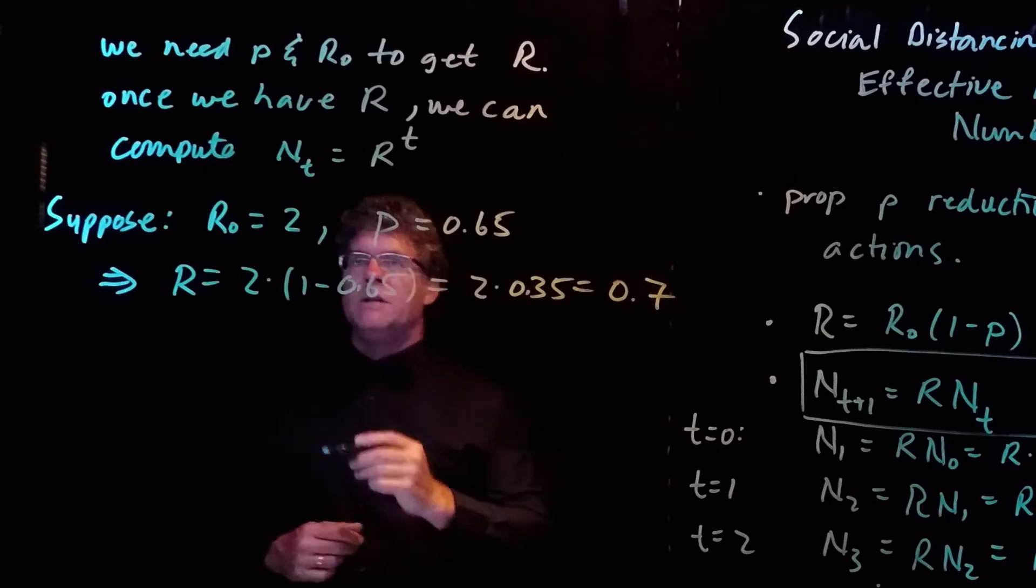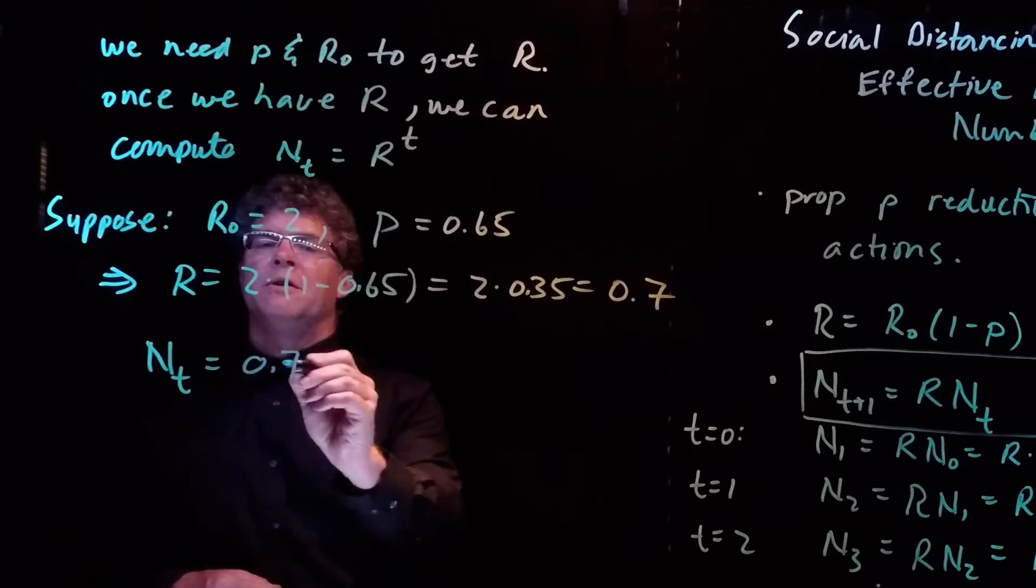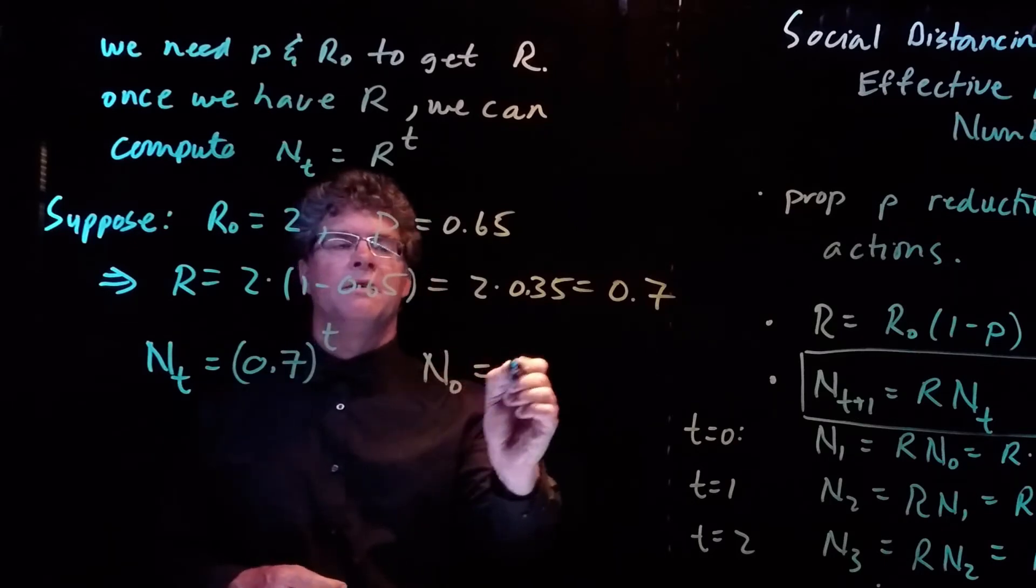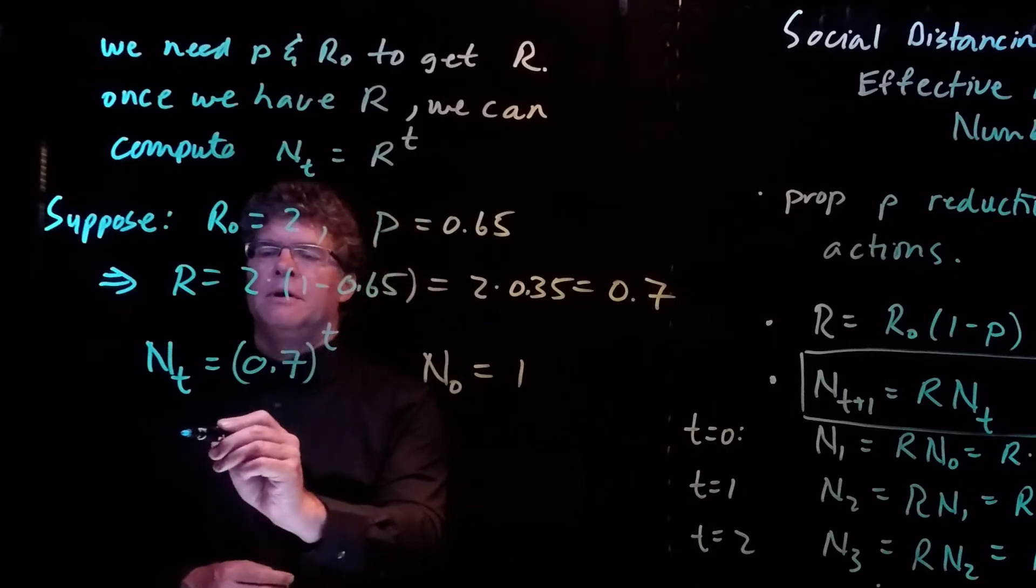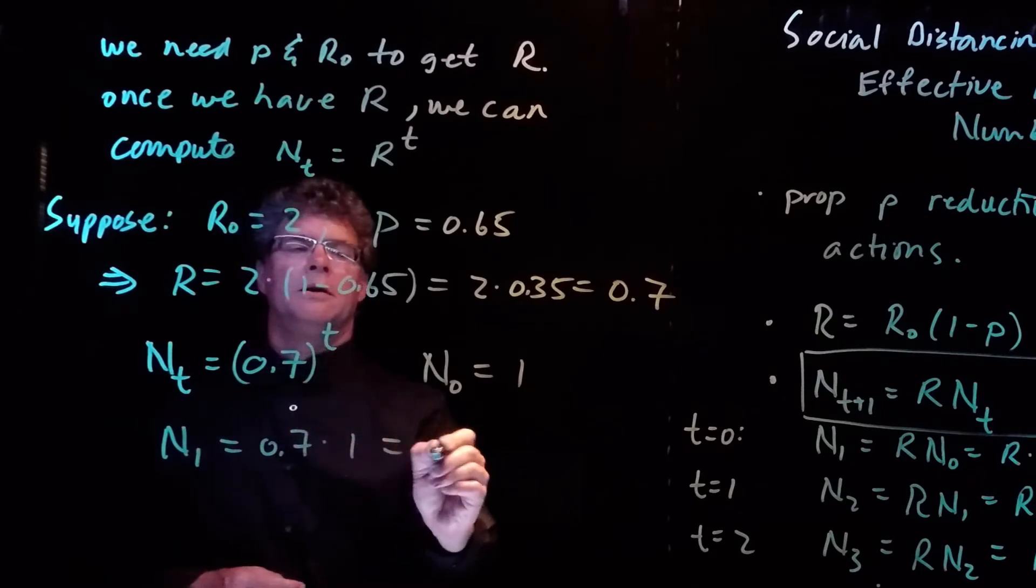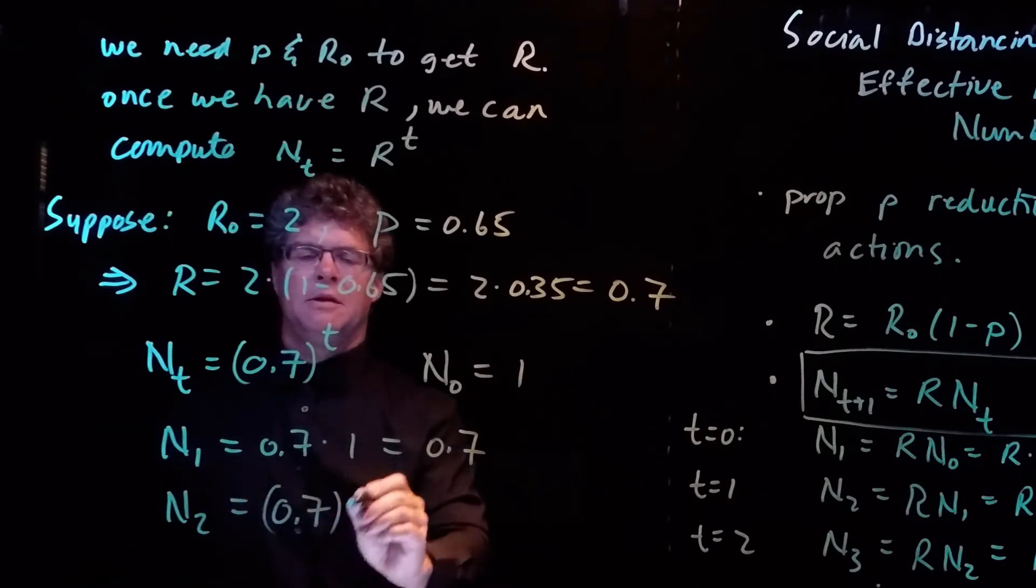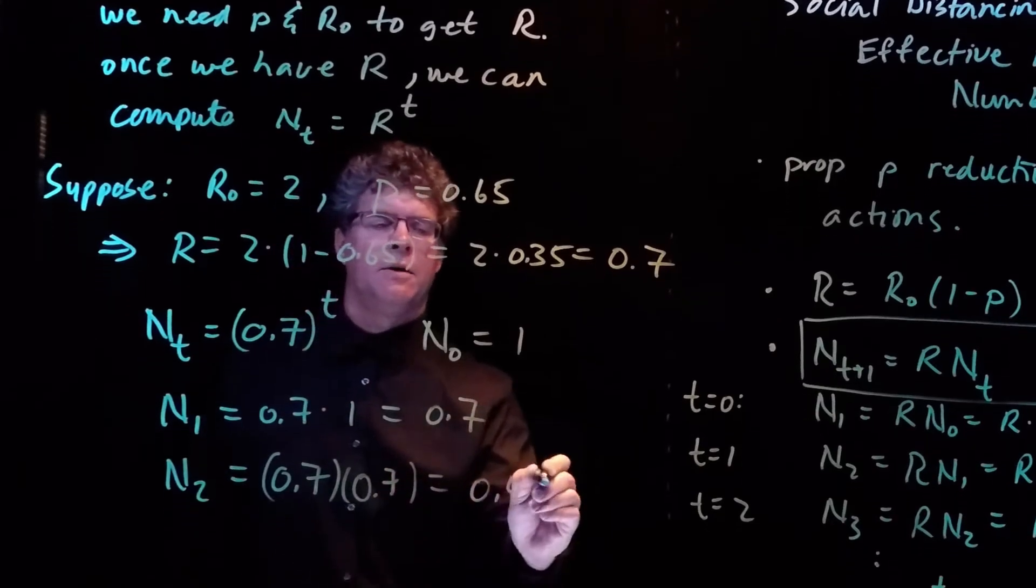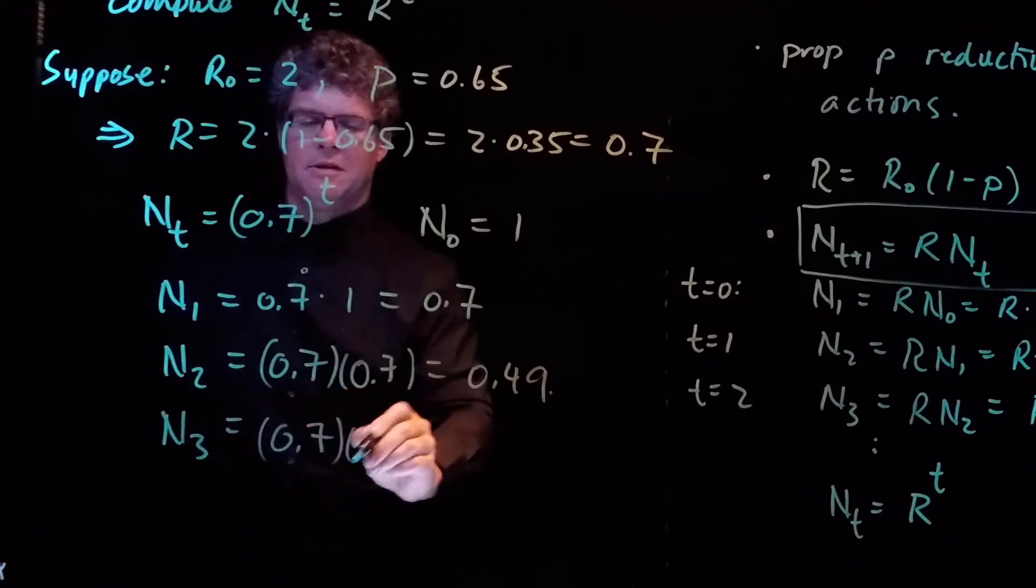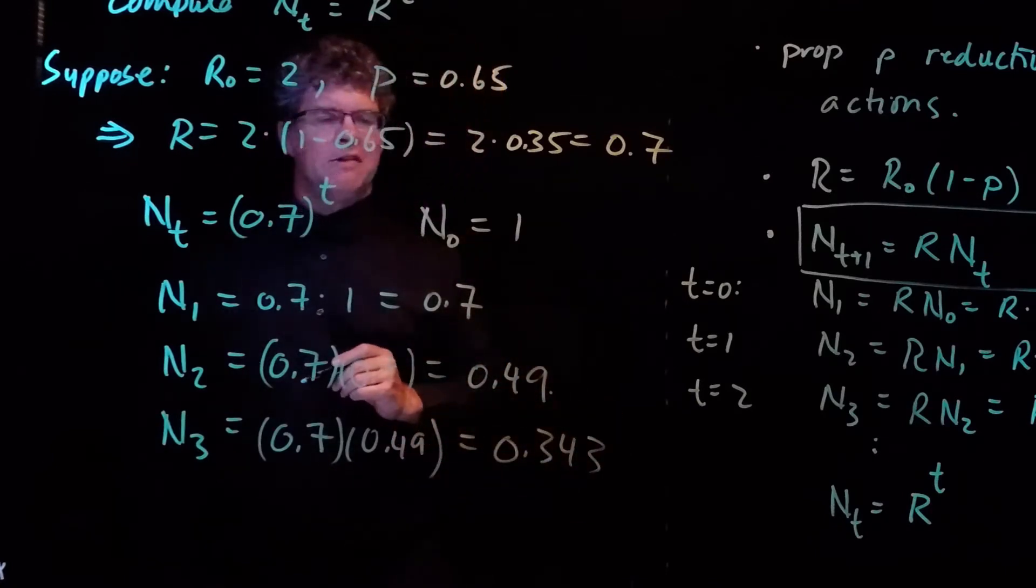So what does our solution look like? N_t is 0.7 to the t power. And if we start with N_0 equals 1 as we did before, then we have N_1 is 0.7, N_2 is 0.7 times 0.7, which is 0.49, and N_3 is 0.7 times 0.49, which is 0.343. You can see the direction that this is going.